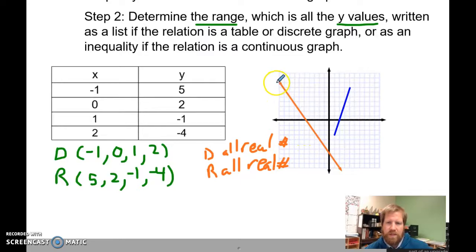Because it's got arrows on the end, it keeps on going forever. With a line segment, we have to calculate and figure out where our endpoints are.